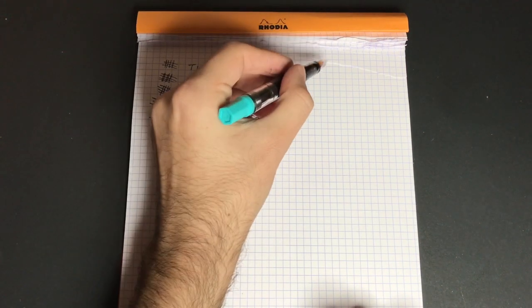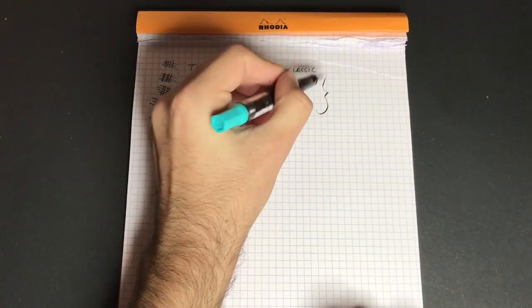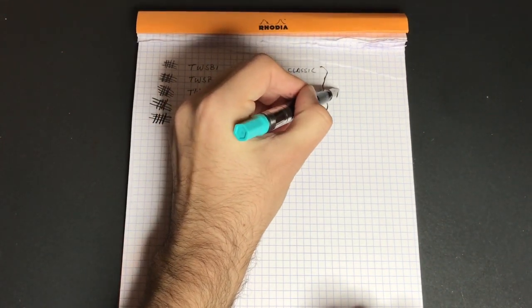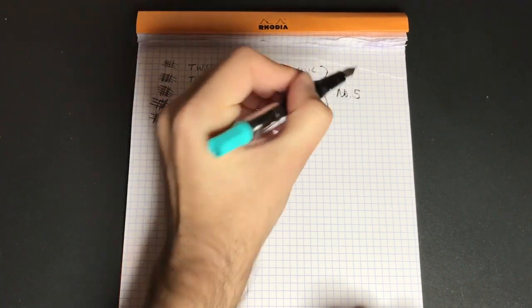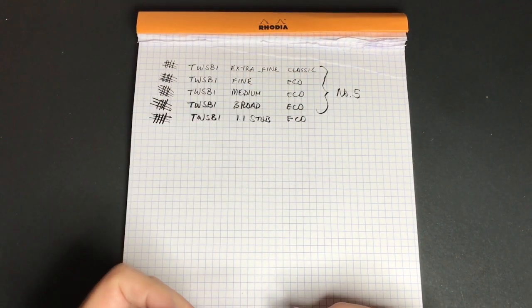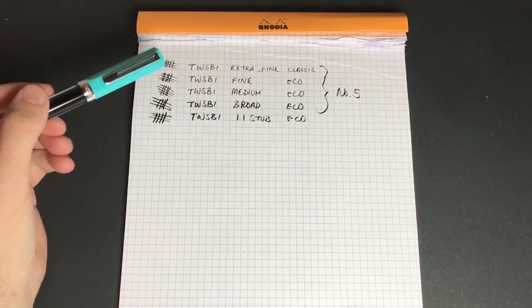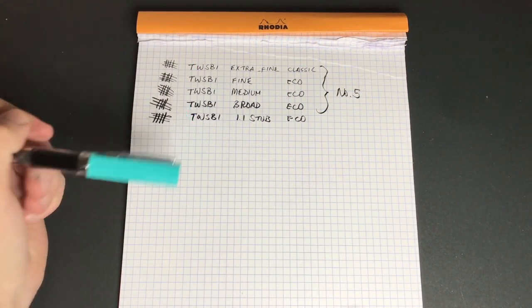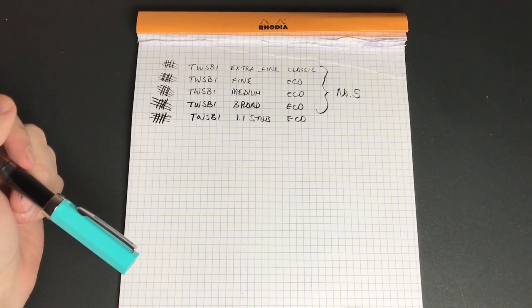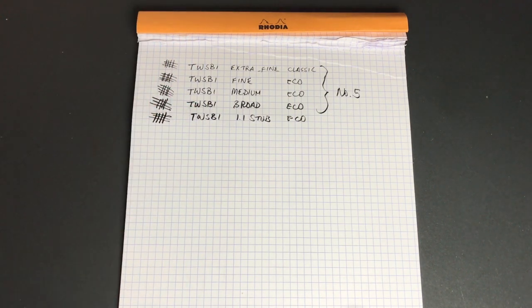And as I should have said, all of these are number five nibs. So that is a really lovely set of line variation that you can get from the TWSBI pens, from the extra fine through to the 1.1 stub. They're beautifully smooth writing pens and just really nice to work with.